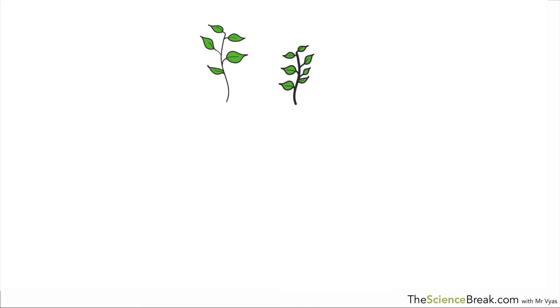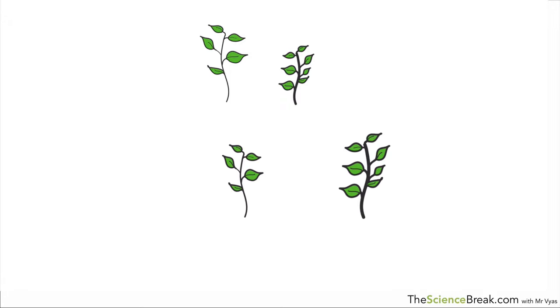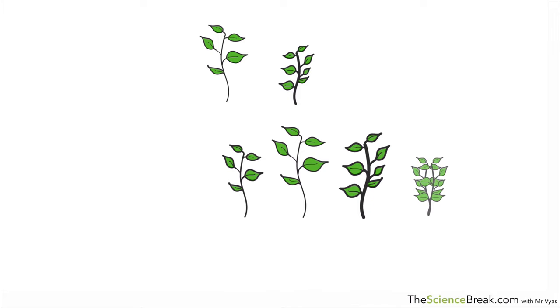Well we can take a look at an example of two plants of the same species. You can see their features are slightly different, but if they were to reproduce sexually we would get offspring and there would be variation in those offspring.